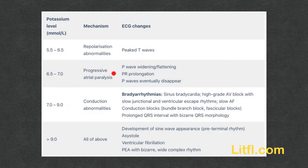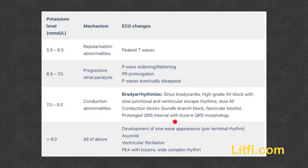At higher potassium levels, we see P wave widening and flattening, and PR prolongation. P waves eventually disappear — we'll see this on EKGs shortly. Above a potassium of 7, bradyarrhythmias appear, including sinus bradycardia, high-grade AV block, bundle branch block, and fascicular block.